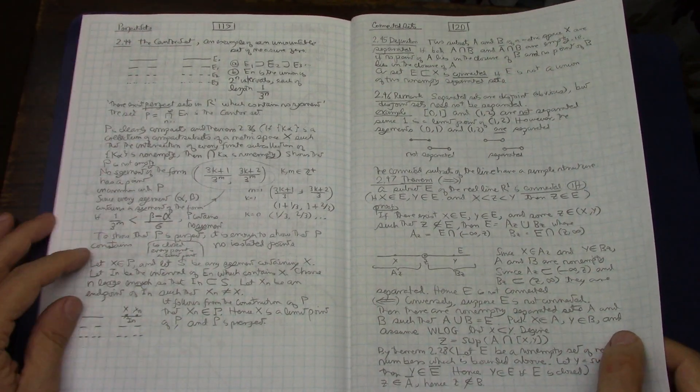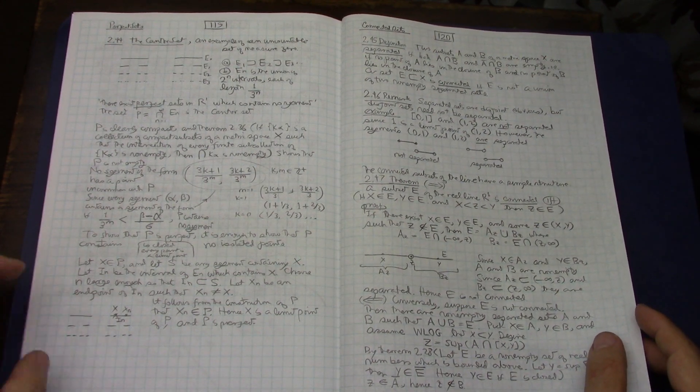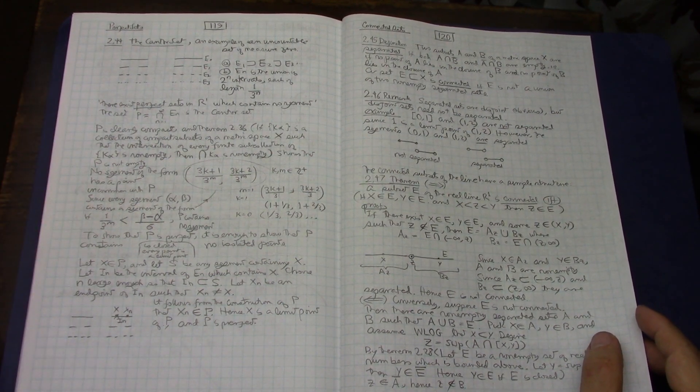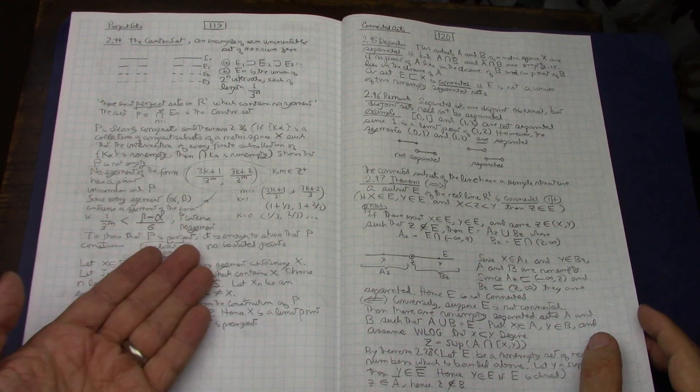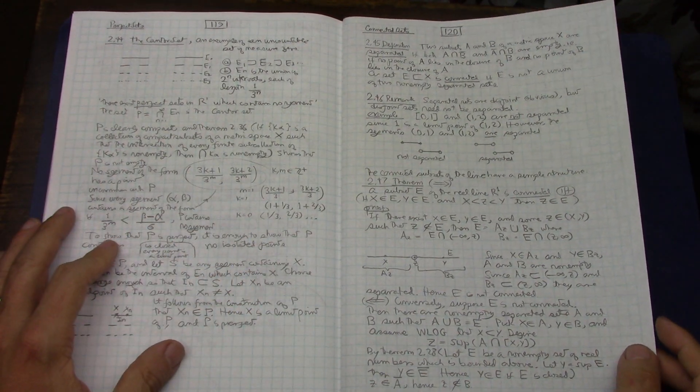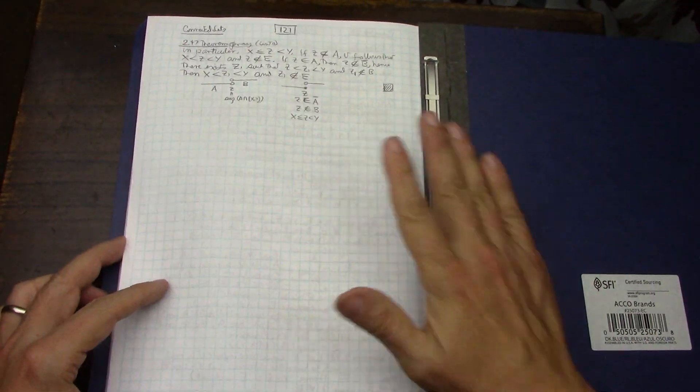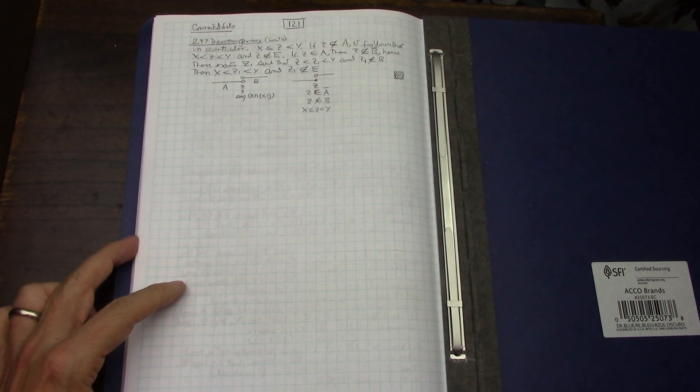The Cantor set which I've seen before and it's in Abbott and other books, very interesting the way Rudin describes it. I like it, I like the way he describes it. I really like this best from what I've seen before. Then things about connected sets and there is chapter 2 of Rudin.